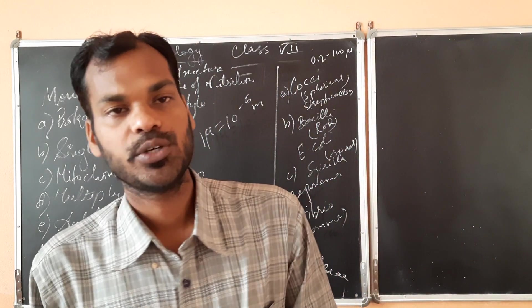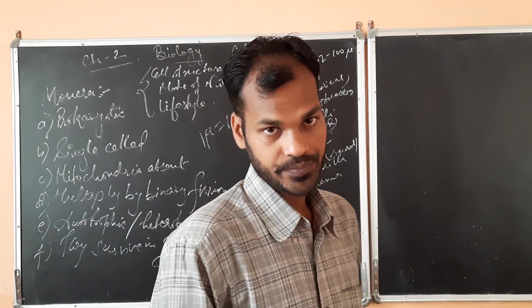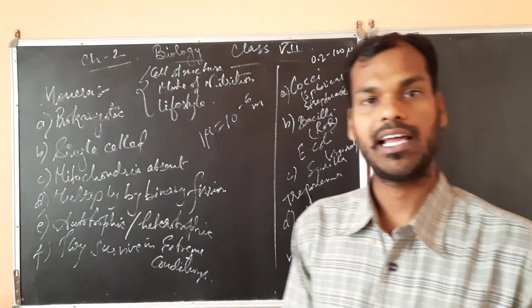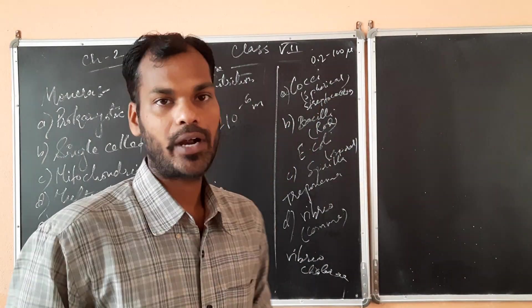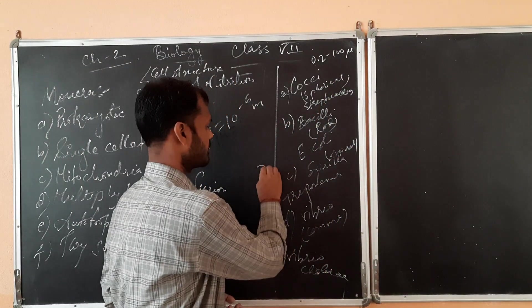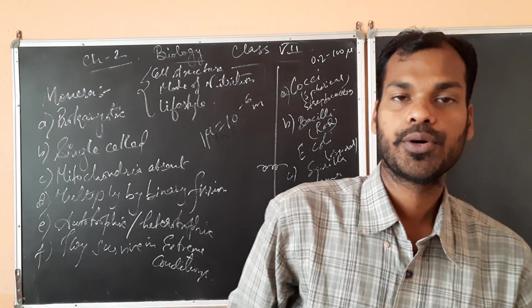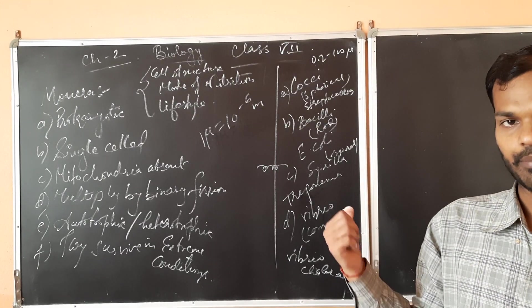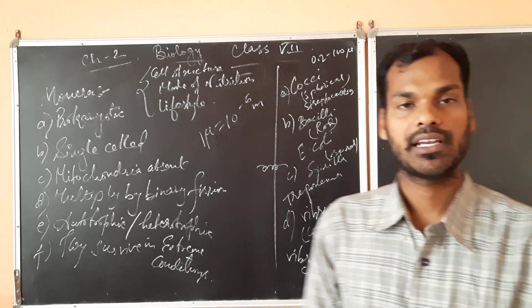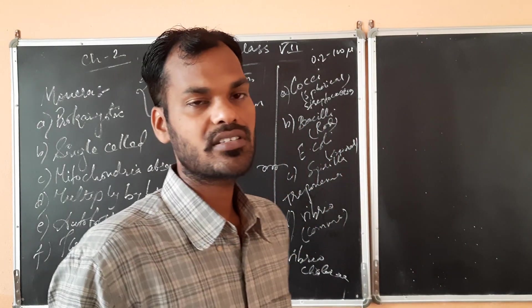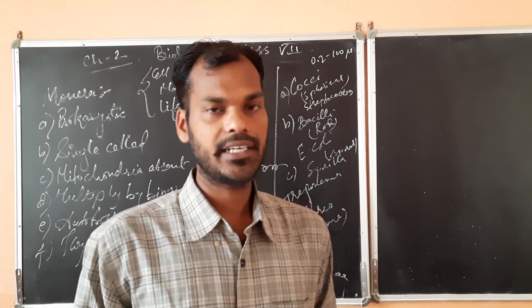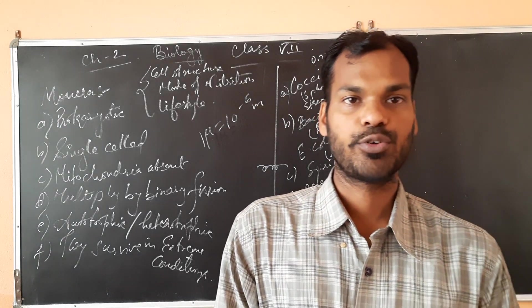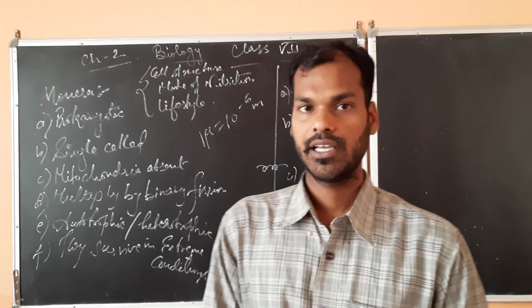Then next is spirillum. Spirillum is just like spiral shaped, coil shaped, just like this, spiral just like a spring. Treponema is the example of spirillum. Then last one is vibrio. Vibrio is just like comma, and the beautiful example is Vibrio cholerae which is causing cholera in case of human beings. So these are the different types of bacteria based upon the shape.